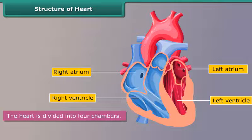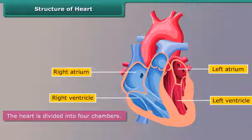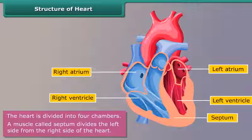The heart is divided into four chambers. The two chambers at the top are known as the left atrium and the right atrium. The two chambers at the bottom are known as the left ventricle and the right ventricle. The muscle called septum divides the left side from the right side of the heart.